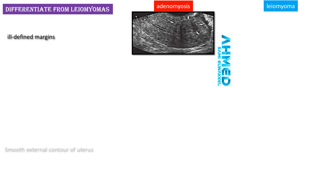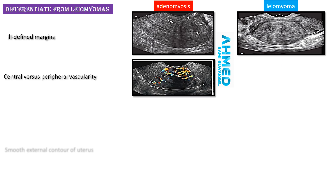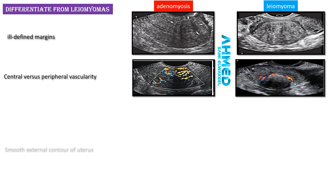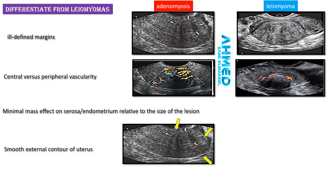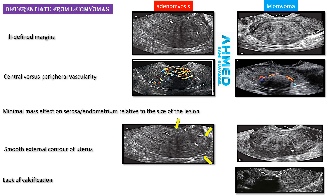To differentiate adenomyosis from leiomyomas: adenomyosis has ill-defined margins, while leiomyoma has well-defined margins. Adenomyosis shows central vascularity, while leiomyoma shows peripheral vascularity. Adenomyosis has minimal mass effect on the serosa and endometrium relative to lesion size. Adenomyosis maintains a smooth external uterine contour, while leiomyoma produces a non-smooth contour. Adenomyosis lacks calcification, while leiomyoma may show calcification.